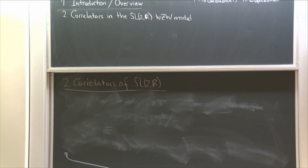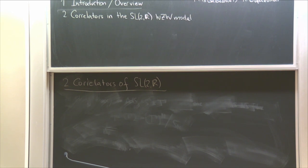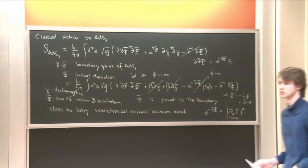What is putting us close to the boundary? The solutions we will see have gamma holomorphic and phi holomorphic plus anti-holomorphic. If you look at the equations of motion, by the equations of motion you see that this part has to disappear, and that's what's putting you at the boundary. The actual solution has e^{-phi} with an infinite constant — this gives you an infinite shift in phi.